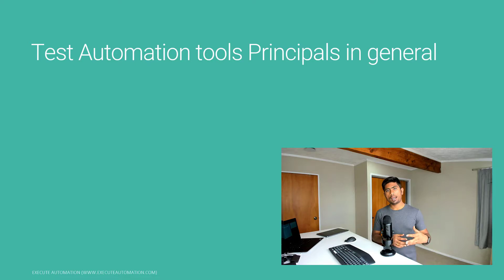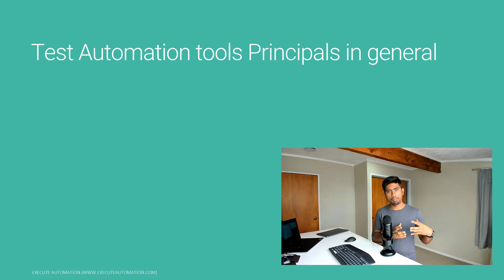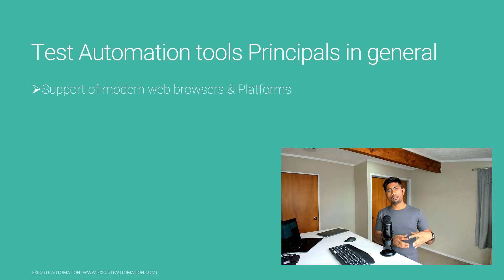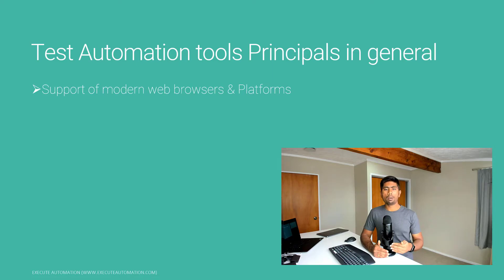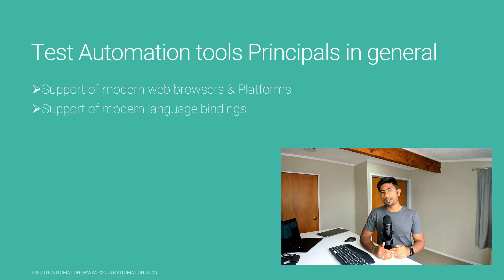If there is an automation testing tool in the market, you need to evaluate it based on key principles. The first principle is that the testing tool should support modern browsers — for example, Chrome, Edge, Firefox, and Safari. It should also support modern platforms like the Windows and Mac operating systems. Another key criterion is support for modern language bindings, such as C#, Java, JavaScript, TypeScript, and Python.